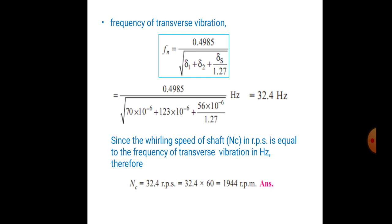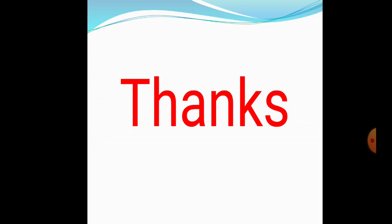The natural frequency of transverse vibrations: fn equals 0.4985 over square root of (delta_1 plus delta_2 plus delta_s) divided by 1.27, giving fn equals 32.4 Hz. The whirling speed nc equals 32.4 rps, converting to rpm: 32.4 × 60 equals 1944 rpm. This is all about whirling speed and its problems — it's quite easy.